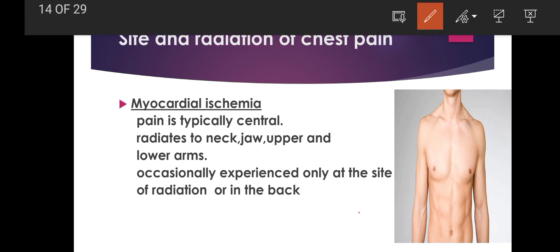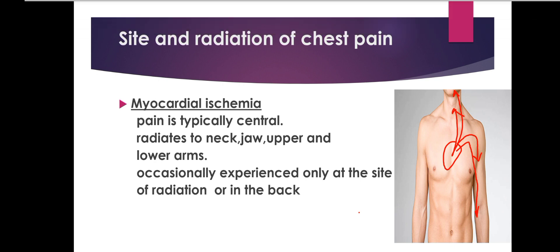Coming towards the site and radiation of chest pain: the pain of myocardial ischemia is typically felt in the center of the chest and radiates to the neck, jaw, upper arm, or lower arm. Sometimes the pain is not experienced at the center of the chest but only at the site of radiation, or rarely in the back.